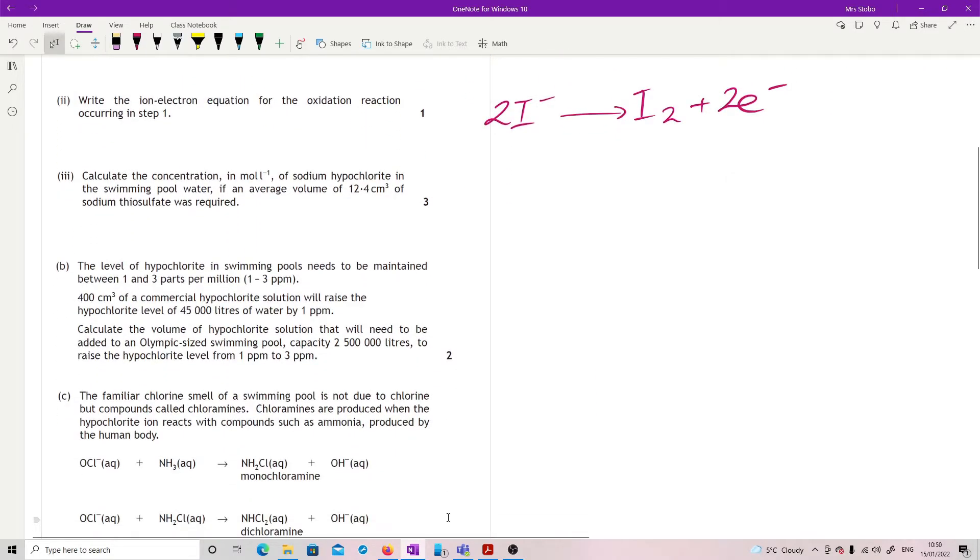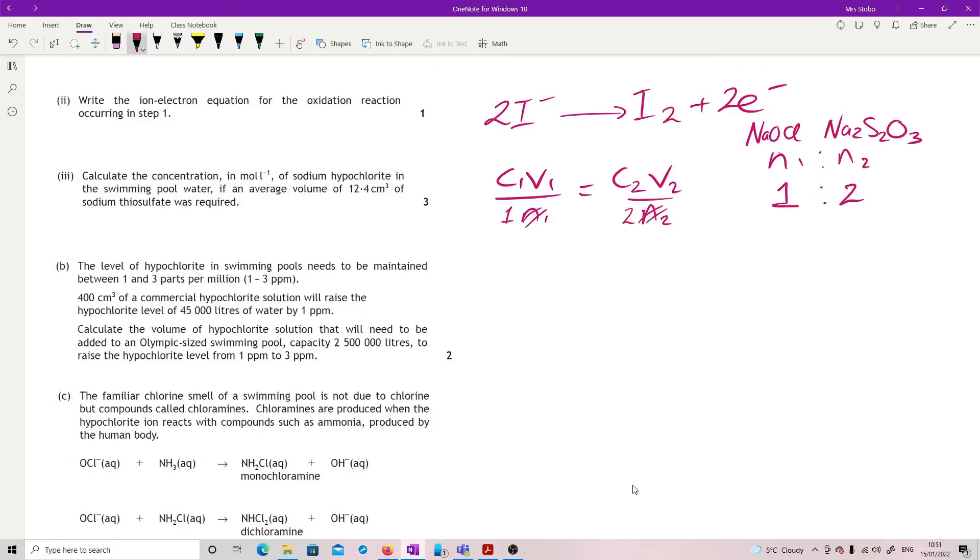Calculate the concentration in moles per liter of sodium hypochlorite in the swimming pool water if an average volume of 12.4 centimeters cubed of sodium thiosulfate was required. There are multiple ways you can do this. Let's go with the shortcut method first. This is a titration so I can use C1V1 over N1, C2V2 over N2. Being really careful, the N1 and the N2 is your stoichiometry from the equation. So we are working with our NaOCl. That's the one we want to find out and our N2 is the thing that we are working with and know. So our N1 in this one is 1 and that's 2 because of what I said at the beginning.